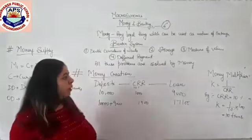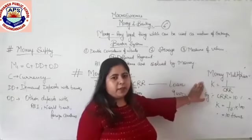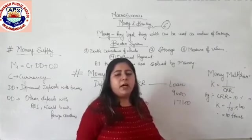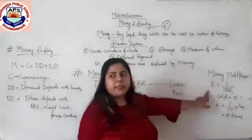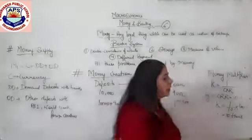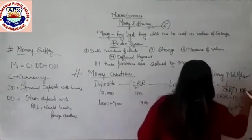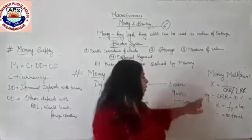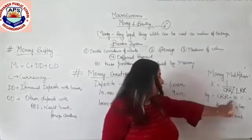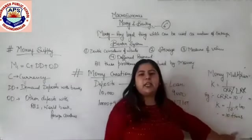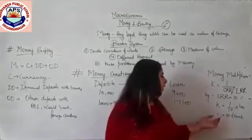The next concept is the money multiplier, also called the credit multiplier. The credit multiplier tells us how much you reserve and how much credit you can give. The formula is 1 upon CRR. CRR is also known as LRR — Liquidity Reserve Ratio — which is easily convertible to cash. If CRR is 10%, then 1 divided by 10% multiplied by 100 gives 10 times. This means we can give credit 10 times the initial deposit.